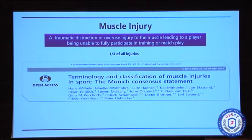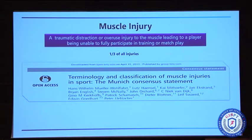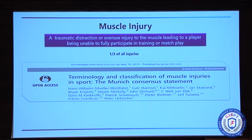We had a consensus meeting with a group of experts in Munich several years ago. The definition of a muscle injury which we use in our injury study is that it's a traumatic distraction or an overuse injury to the muscle leading to a player being unable to fully participate in training or match play. So it's a time-loss definition. It's one-third of all injuries — the absolute greatest problem in elite football.